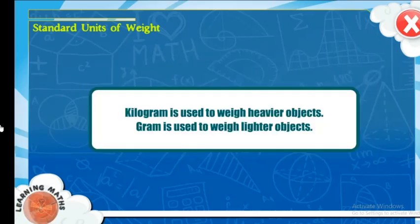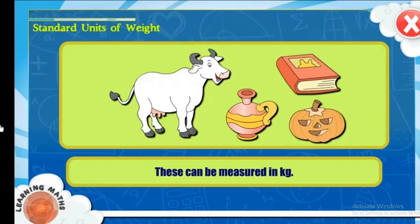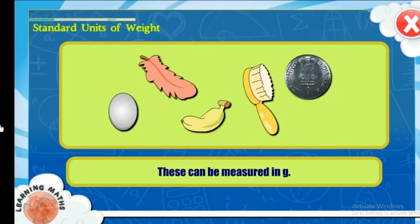Kilogram is used to weigh heavier objects. Gram is used to weigh lighter objects. These can be measured in kilogram. These can be measured in grams.